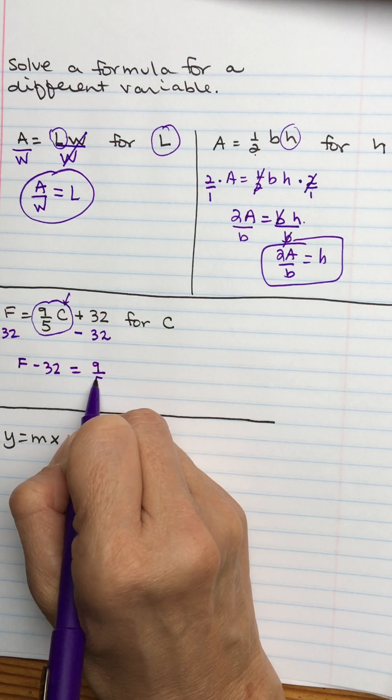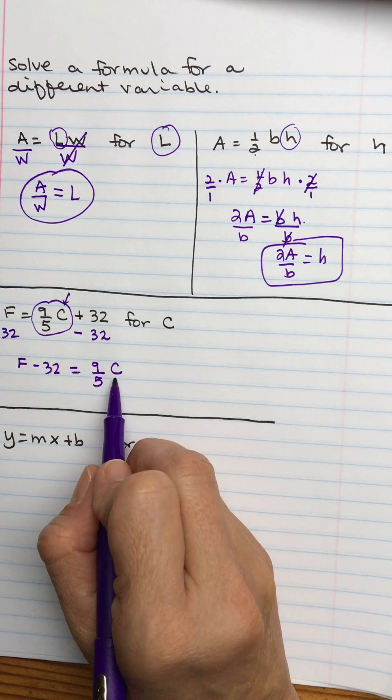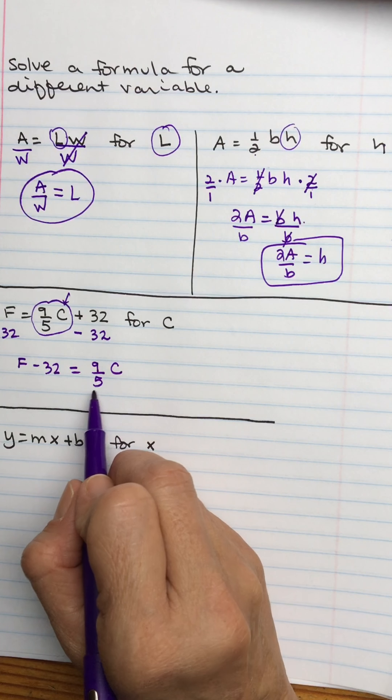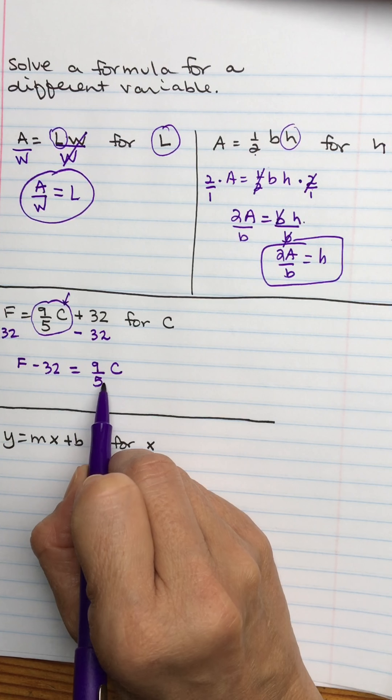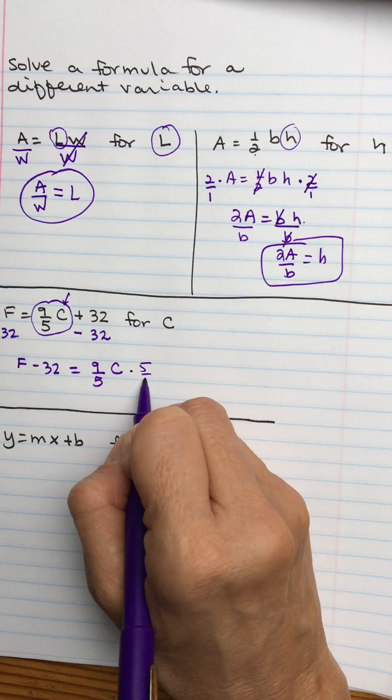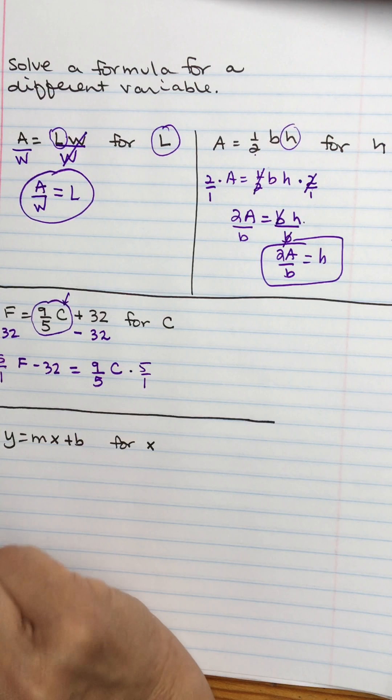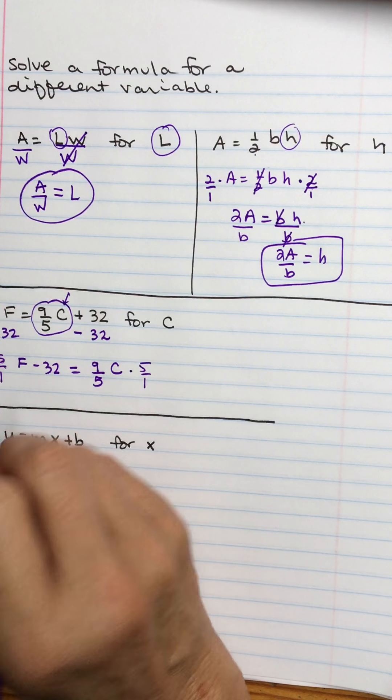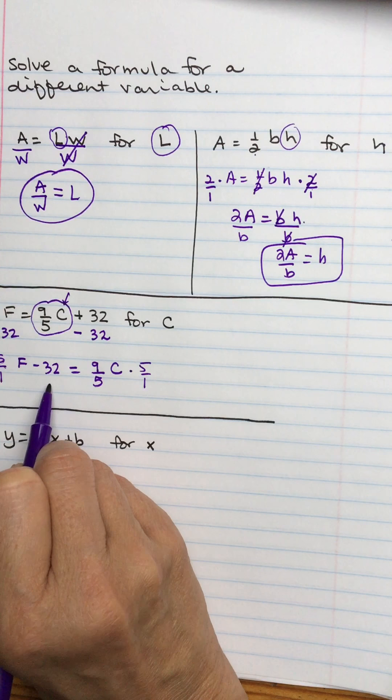So now my left-hand side is going to be F minus 32, and the right-hand side is 9 fifths times C. So I'm trying to get to my C. So let's go ahead and get rid of the 5 first. So to do that, it's in the bottom, so I'm going to multiply the right side by 5 over 1. So I have to multiply the left side by 5 over 1 as well.